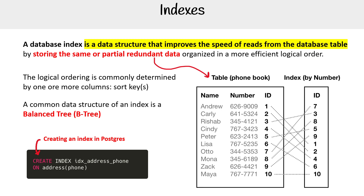Here's a very easy way to create an index in Postgres. You'd say CREATE INDEX, give it a unique name, and then specify you want to make an index on the addresses table but just on the phone number column.